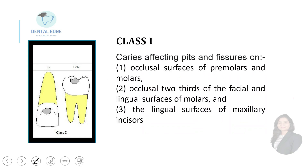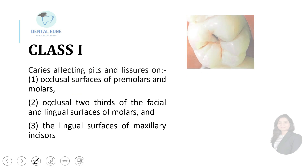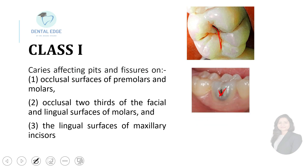Class one is caries affecting pits and fissures on the occlusal surface of premolars and molars. It also includes the occlusal two-thirds of the facial and lingual surfaces of molars — for example a buccal pit or a palatal pit — and the lingual surfaces of maxillary incisors. This is a pit and fissure caries involving the occlusal surface of a molar.